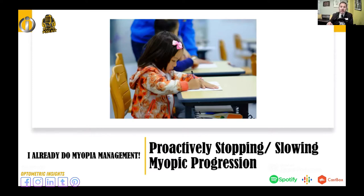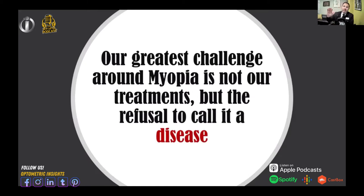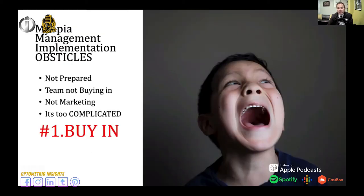We're talking about being somebody who alters, manipulates, and modifies refractive error for our patients — similar to how we modify or treat diseases like glaucoma and macular degeneration. Macular degeneration is a great example where we can't necessarily keep somebody from getting it, but we work to slow down its progression. The greatest challenge around myopia is not the treatments we have — we have phenomenal treatments — but our refusal to call myopia a disease.